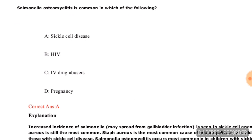Salmonella osteomyelitis is common in which of the following — sickle cell disease, HIV, IV drug abusers, or pregnancy? The correct answer is sickle cell disease.